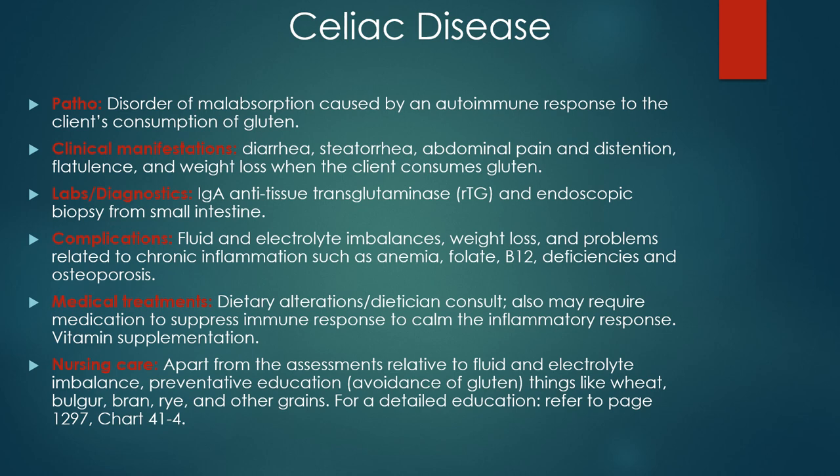Celiac disease is an autoimmune disorder in response to the consumption of products that contain the protein gluten. Gluten is most commonly found in wheat, barley, rye, and other grains like malt, beers, dextrin, and brewer's yeast — things like bread. About only one percent of the U.S. has celiac disease, and there is a familial risk component particularly among first-degree relatives. Others at heightened risk are type 1 diabetics and those with Down syndrome or Turner syndrome.